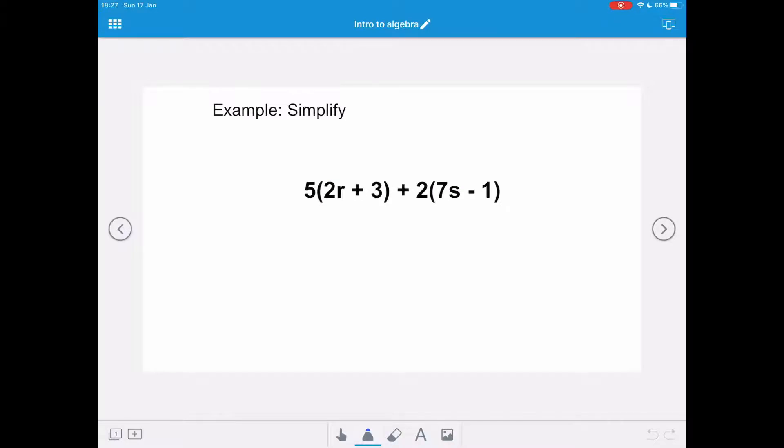In this one we have two brackets. We want to simplify 5(2r+3)+2(7s-1). So let's underline the first bracket and deal with it first. So 5 times 2r gives us 10r and then we're doing 5 times plus 3 which is plus 15. Now we need to deal with the second bracket. So it's plus 2 times 7s which is plus 14s and then we've got plus 2 times negative 1 so that's negative 2.